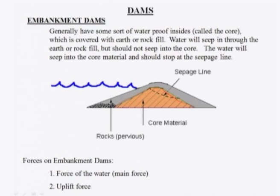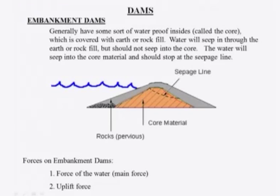Core material is called water-proofing, but it is not completely impermeable. The seepage through the core is less compared to seepage through the surrounding rock or pervious materials. The main forces on embankment dams are due to water. Another force is the uplift force — water passing beneath the dam creates an upward pressure.